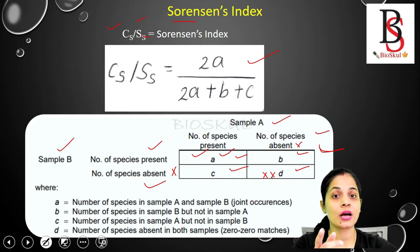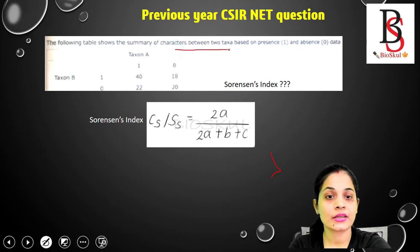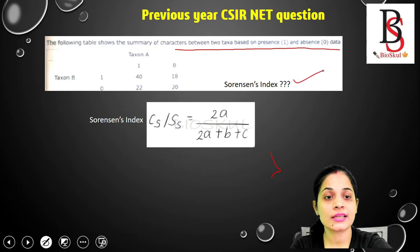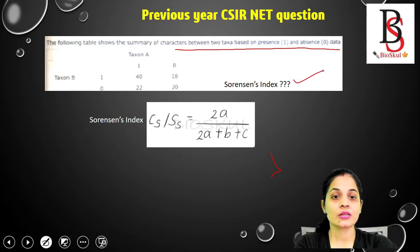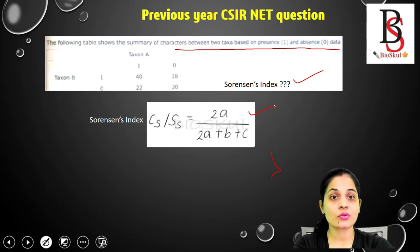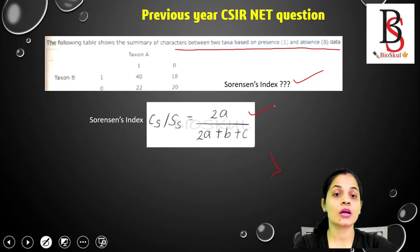Now we are going to solve a previous year question on Sorensen's index. The question shows a summary table of characters between taxa based on the presence and absence of data, and we have to calculate Sorensen's index. Note: this question in CSIR NET also asked for the Jaccard coefficient and simple matching coefficient — you will get the link for that in the description box below.